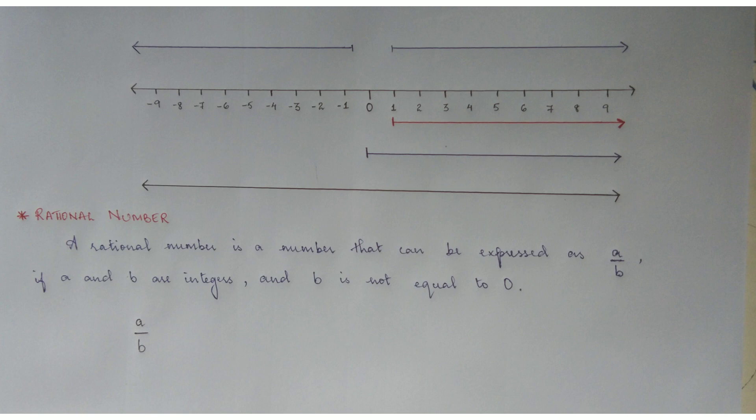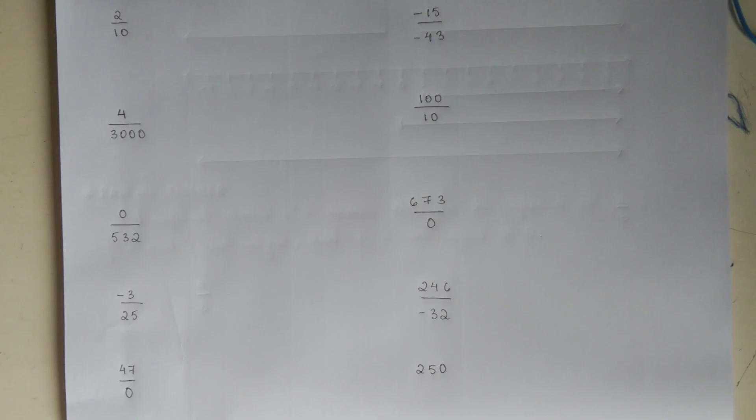So, rational numbers are numbers which can be written as A by B, but A and B, they have to be integers and B can never be equal to 0. So, now, let us look at some examples. If you look at these numbers, you can clearly tell that they are fractions. They are numbers which have numerator as well as denominator. Now, let us look at the first one. 2 by 10. Is 2 by 10 a rational number? Let us check. Is 2 an integer? Yes.